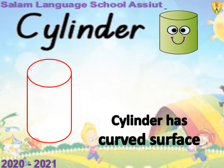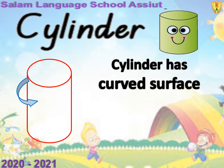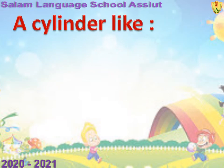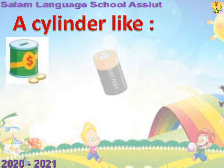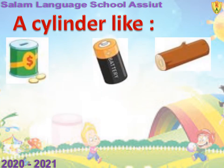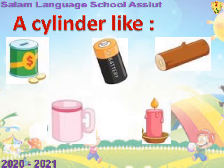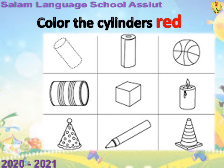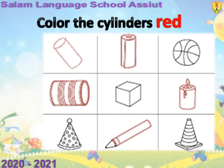The second shape: slender. What's the meaning of slender? يعني شكل استواني. Slender has curved surface. It has two circular faces — يعني لها واجهين على شكل circle, add the top and add the bottom. Slender is like a can, battery, log, mug, and candle. Color the slenders red — يعني هتظهر عندي مجموعة اشكال وهنلون الاشكال اللي على شكل slender. Bravo عليكم.